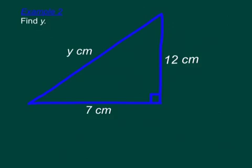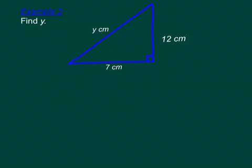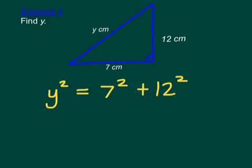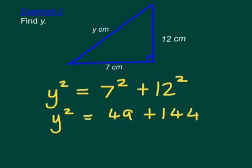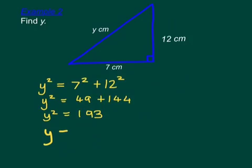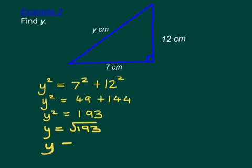And here we have another example where we need to find Y. Using Pythagoras' Theorem, the hypotenuse is Y. So Y squared equals 7 squared plus 12 squared. We can work out 7 squared plus 12 squared — it's 49 plus 144. So we get Y squared is equal to 193, and therefore Y is equal to the square root of 193, which is 13.9 centimeters. And that's three significant figures.